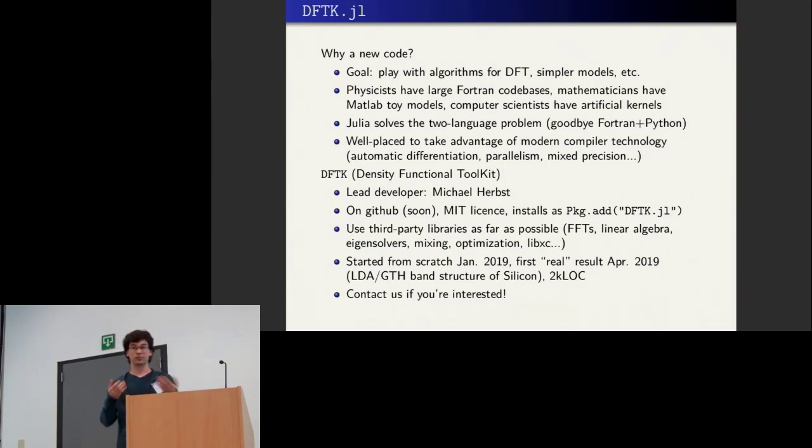So we've started this, this is pretty recent. We started this in January. The lead developer is Michael Herbst, who is a postdoc in our lab. He started in January, and now basically one month ago he had this first demonstration of band structure for silicon at the LDA, GTH level. But of course it's not that hard to go to more professional schemes. And it's 2,000 lines of code, right? And 2,000 lines of code in Fortran, you can declare a function more or less.